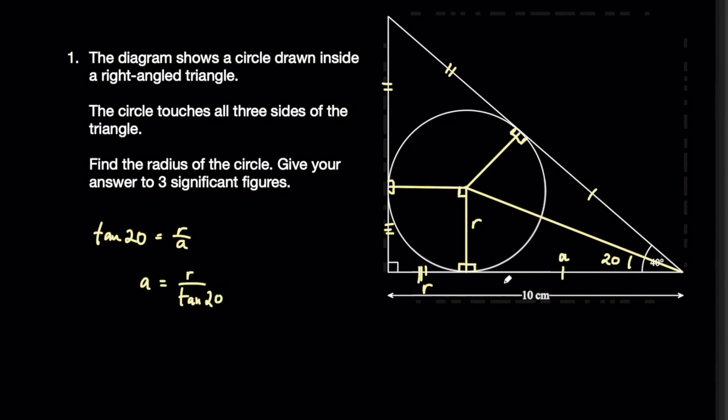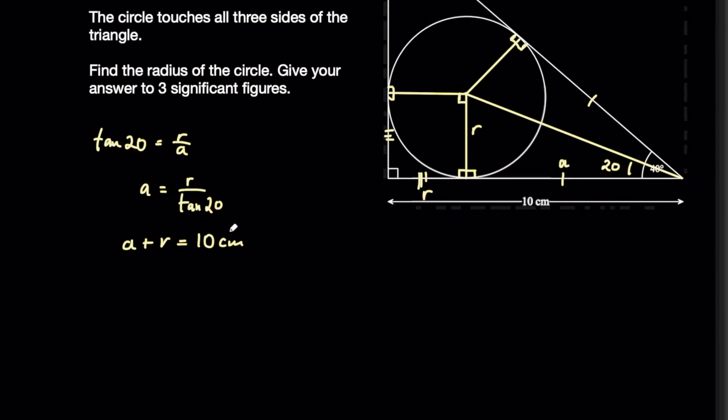Now I want you to focus on this long length here. We've labeled this length A and this length R because we know it's the same length as the radius because this was a square in here. So we know that A plus R is 10 centimeters. I also know that A equals R over tan of 20. So I can say that A plus R equals 10 centimeters. Then substitute this in for A, we can say that R over tan of 20 plus R equals 10 centimeters.